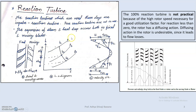In practical cases, pure reaction turbines are not used because we require high velocity of rotor speed with constant rotation, which is not possible with a single reaction turbine. A 100% reaction turbine is not practical because of the higher rotor speed necessary for a good utilization factor. For an impulse turbine we studied that the speed is around 25,000 to 30,000 RPM, so by using a combination of impulse and reaction turbines we can achieve the required high rotor speed.